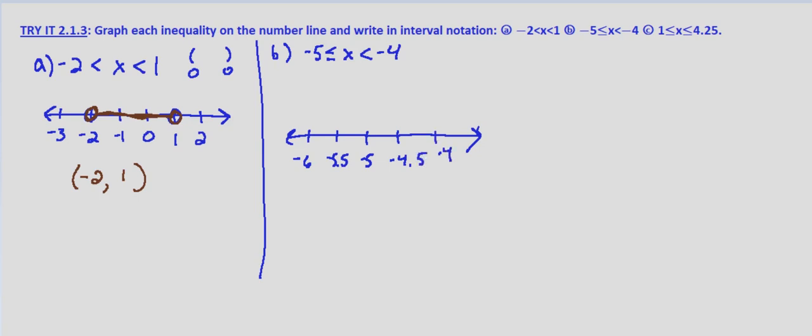So at x equals negative 5, we want either a square bracket or a closed circle. At x equals negative 4, because it's less than negative 4, we want a parenthesis or an open circle. And then x is somewhere between them.